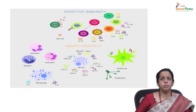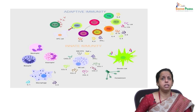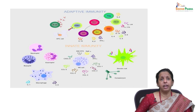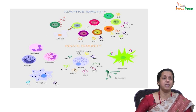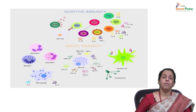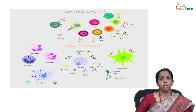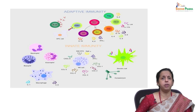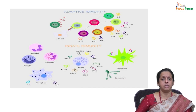Antigen presenting cells, or APCs, are essential for adaptive immunity. They are especially the first antennas for cancer immunotherapies. APCs interact with T helper cells and cytotoxic T lymphocytes, making them central to the adaptive immune response.